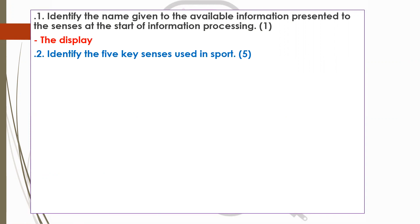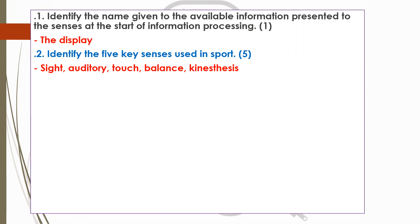Five key sensors used in sports pick up information from the display. You should have sight, which is otherwise known as vision, auditory, which is hearing, and then touch, balance, and kinesthesis. If you take a minute, you could probably think of different examples from sport which fit in with each of those sensors.